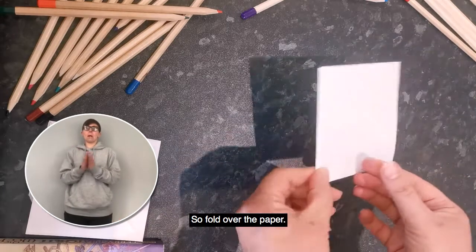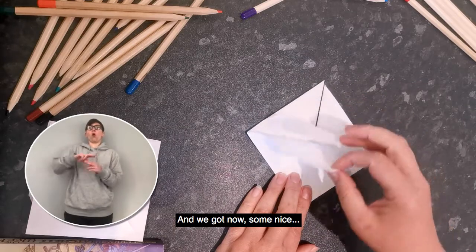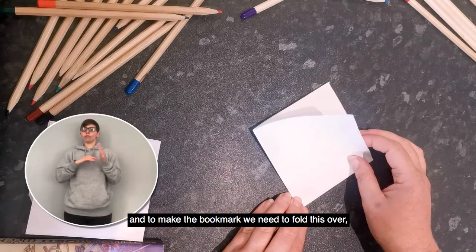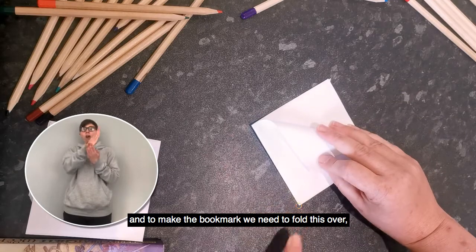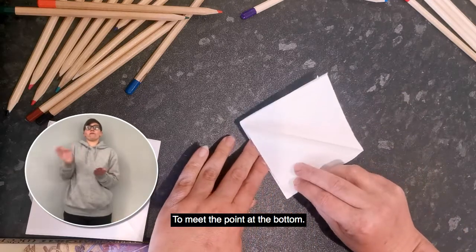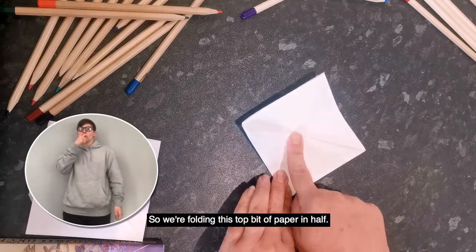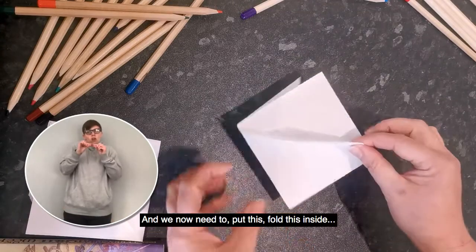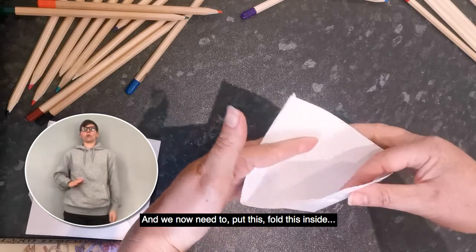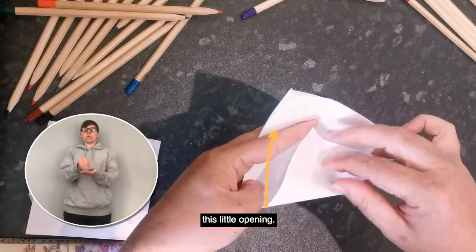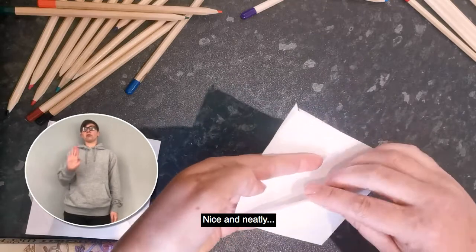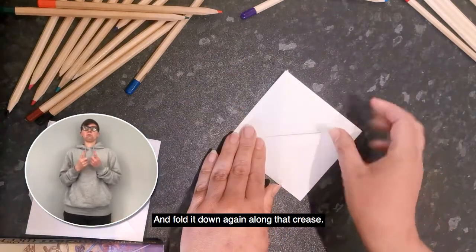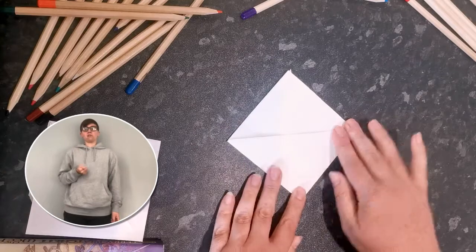Fold over the paper. And we've got now a nice little flap at the top. And to make the bookmark, we need to fold this over to meet the point at the bottom. There we go. So we're folding this top bit of paper in half. And we now need to fold this inside this little opening nice and neatly. And fold it down again along that crease. And there we go.